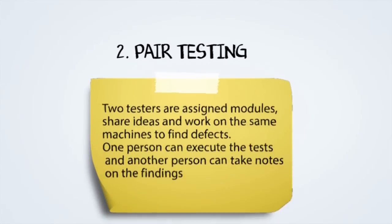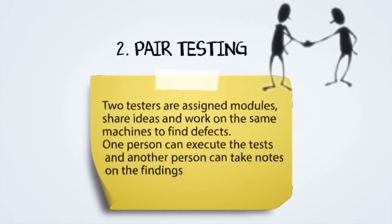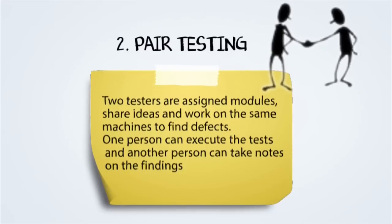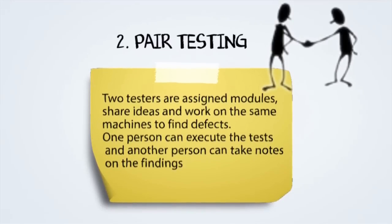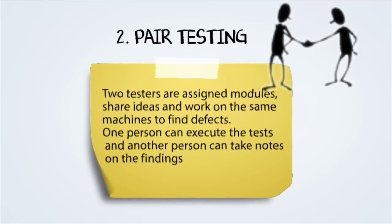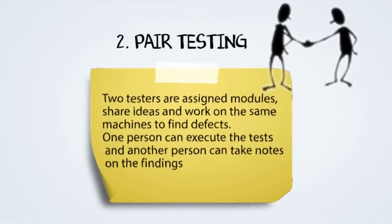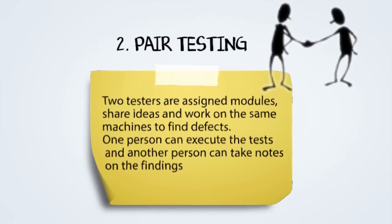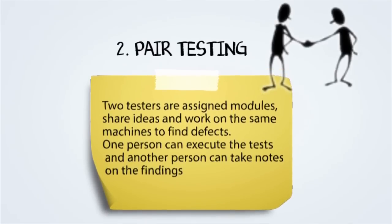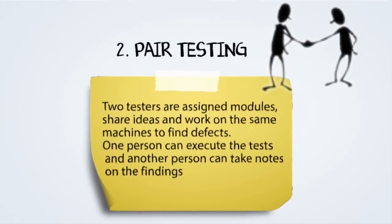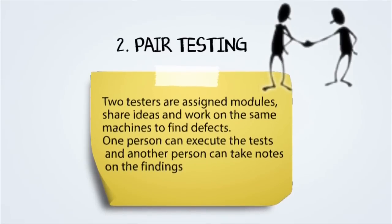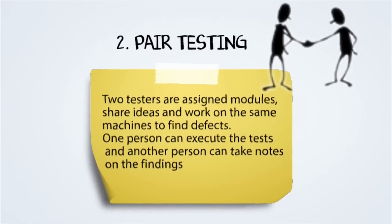Pair Testing: Two testers are assigned modules, share ideas, and work on the same machine to find defects. One person can execute the test while another person takes notes on the findings. One person would be the tester while the other would be the scribe taking notes.